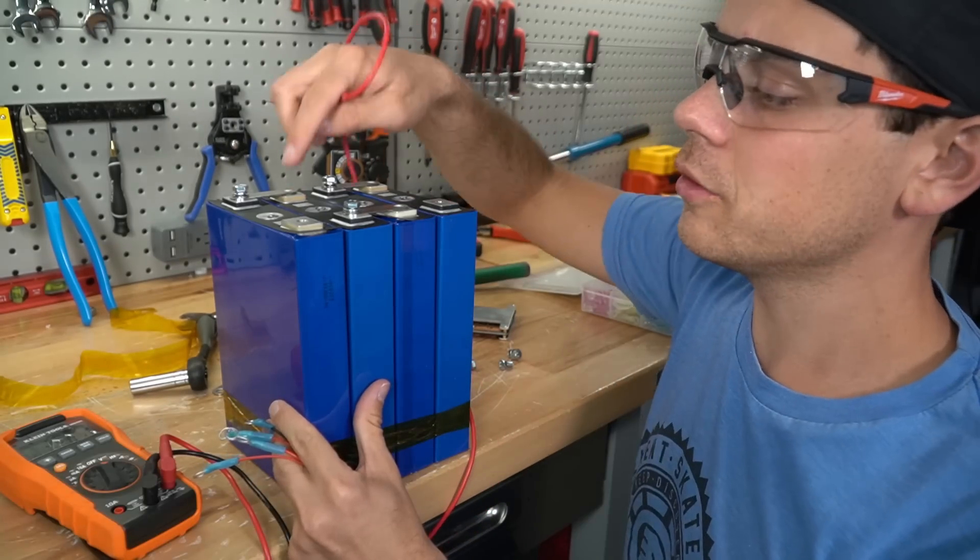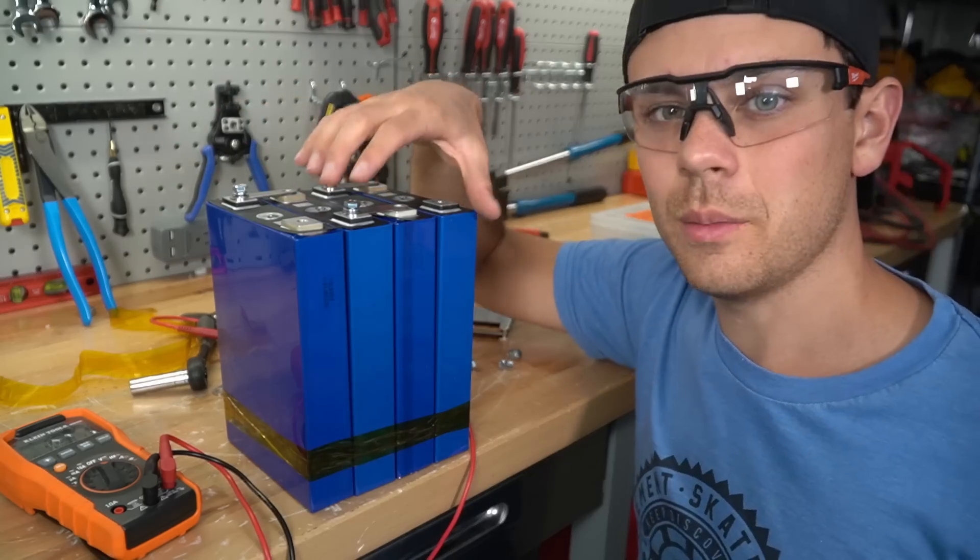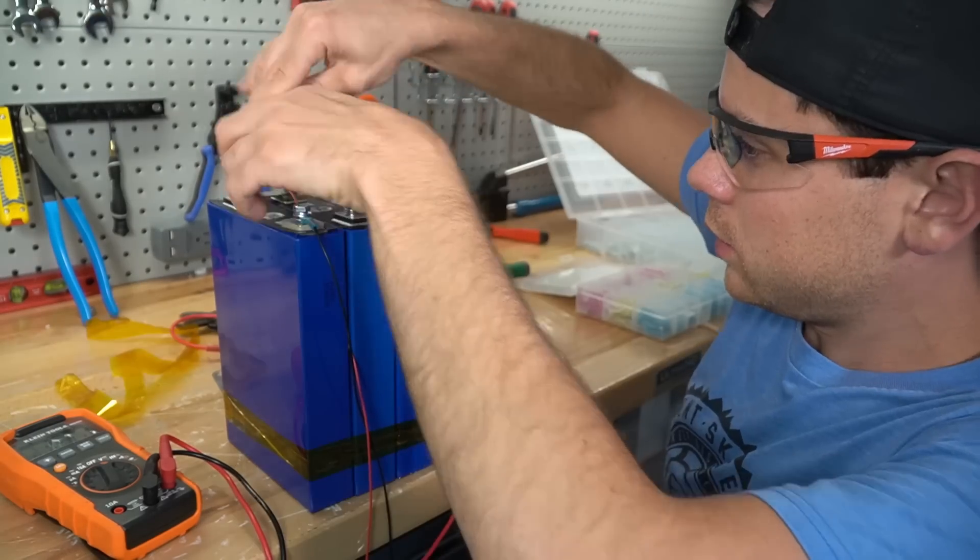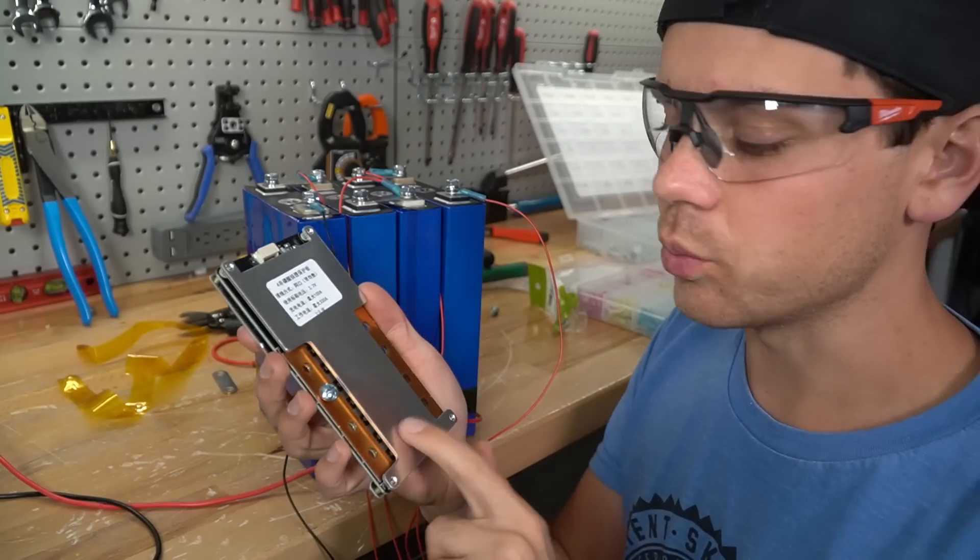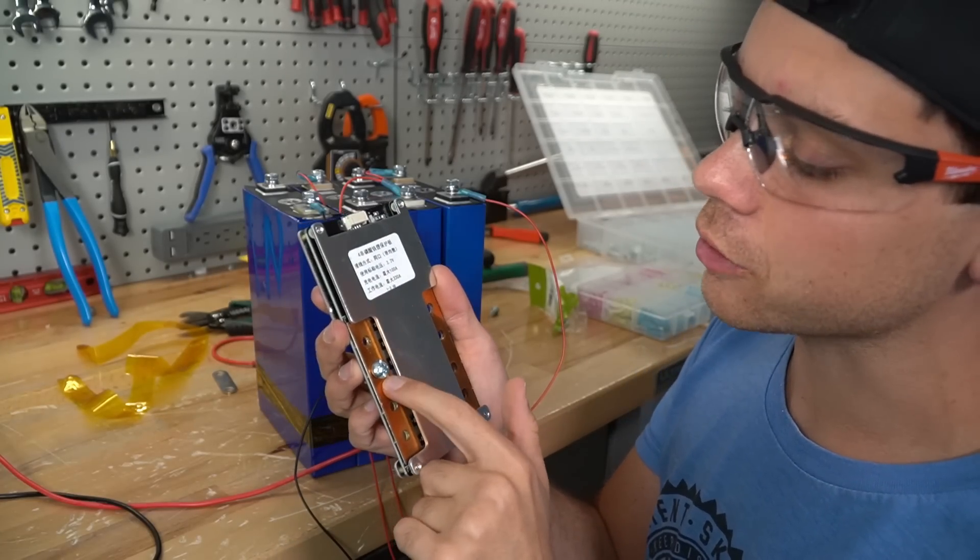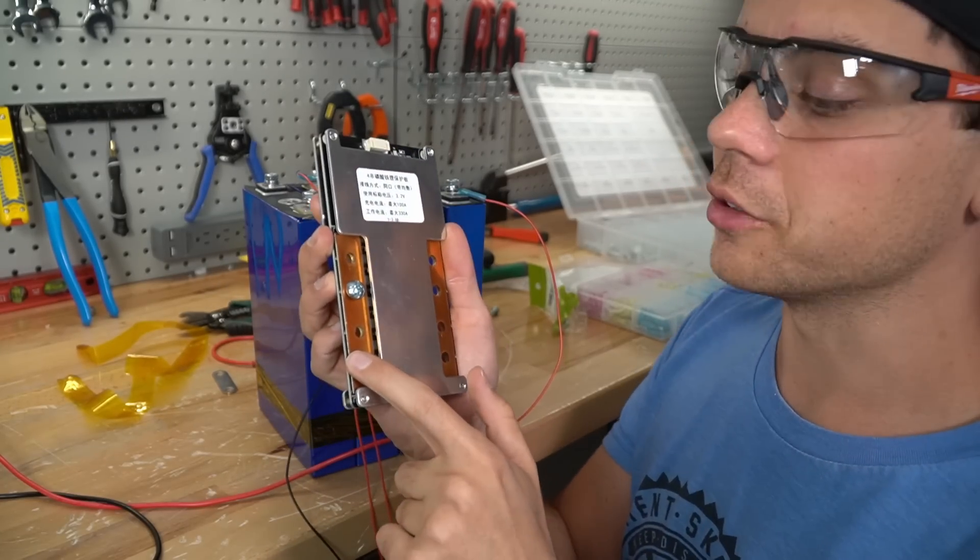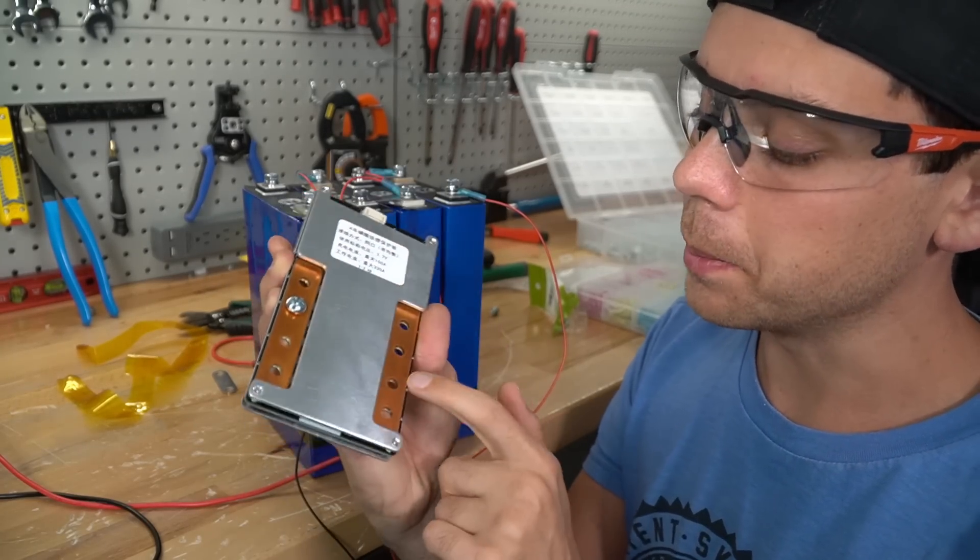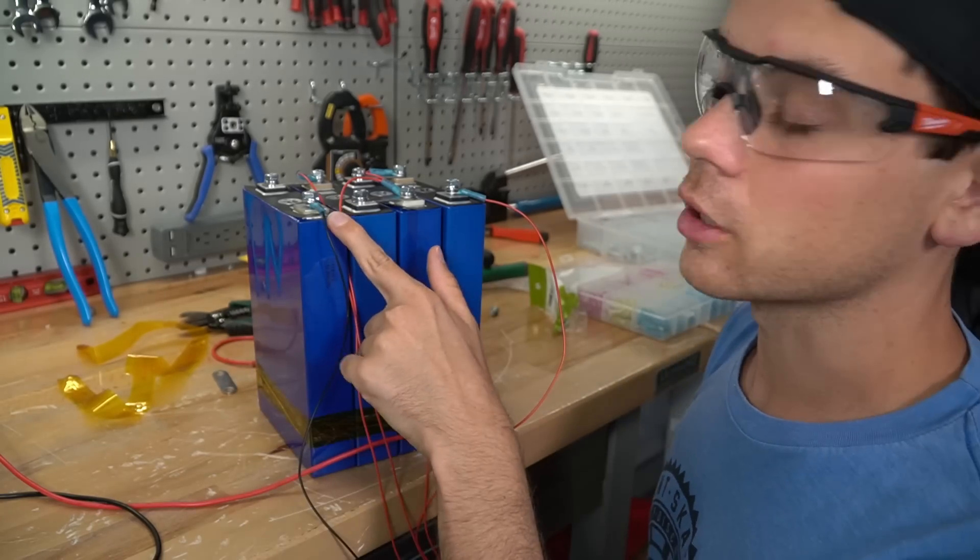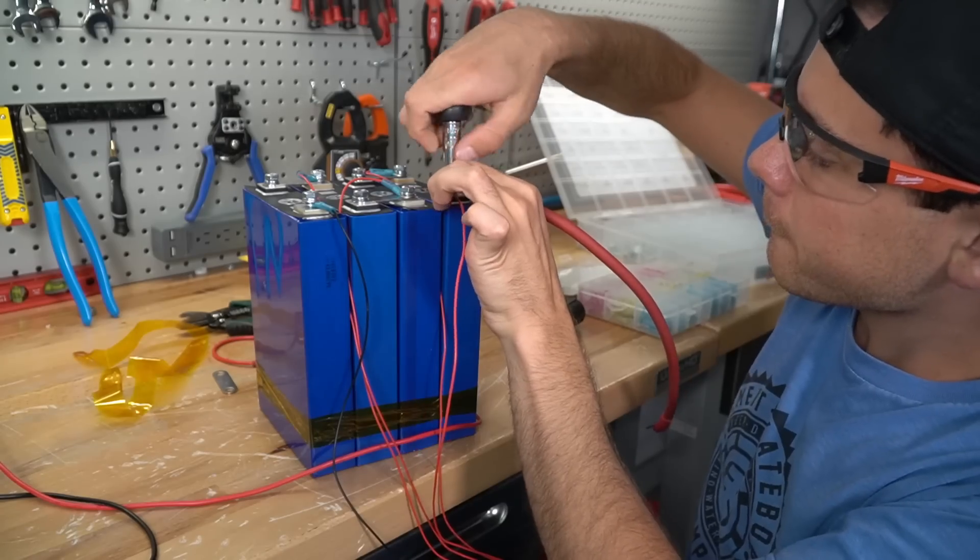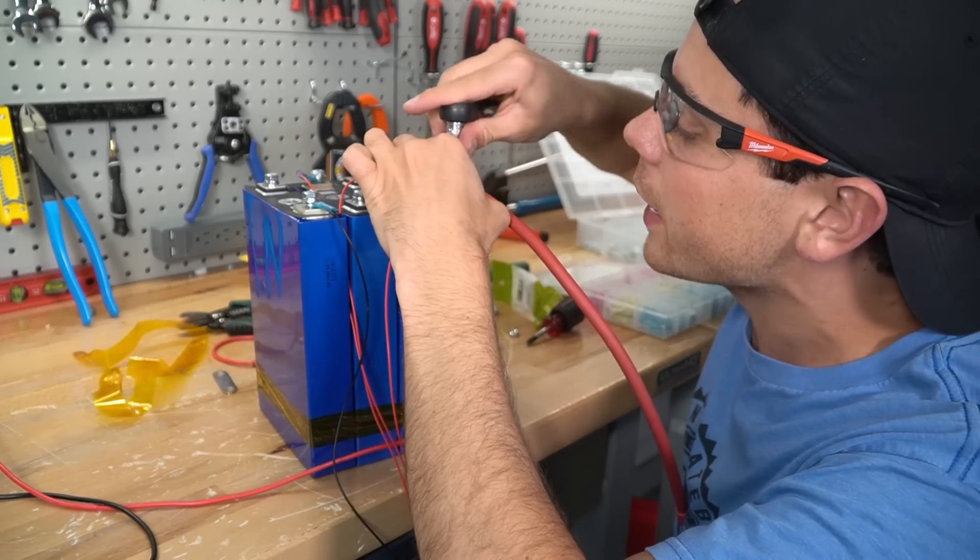The black terminal is positive. White is negative, which is the same on my old RV. I need to add some wires to the BMS, so I'm gonna use some screws. We have P negative that goes out to the loads and chargers and B negative that connects to the negative terminal of the battery. These terminals feel like they want to strip so bad.